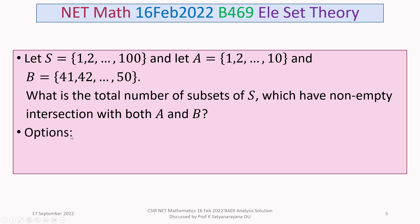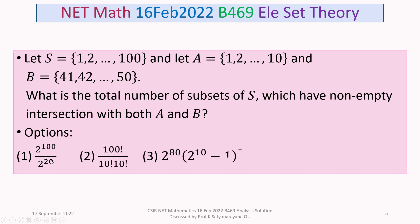We are given four options. Option 1: 2^100 / 2^20. Option 2: 100! / (10! · 10!). Option 3: 2^80 × (2^10 − 1)². Option 4: 2^100 − 2 × 2^10.